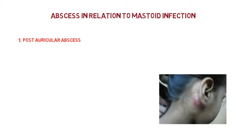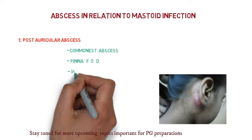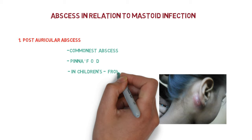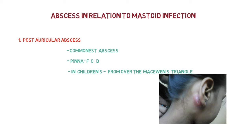The post-auricular abscess is the commonest abscess that forms over the mastoid. Due to this abscess there is a displacement of the pinna — forward, outwards and downwards — but this occurs in adults. In infants or children, the abscess forms over the MC1 triangle. This is an MCQ question: in which part is the post-auricular abscess found in children or infants? The answer is the MC1 triangle.